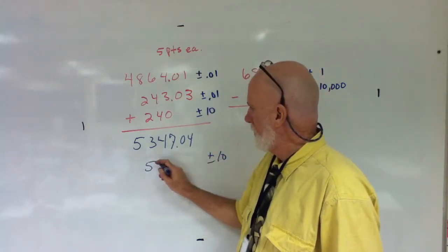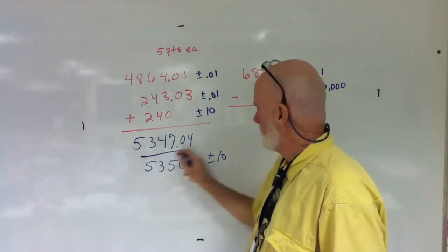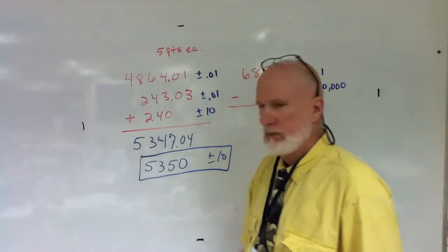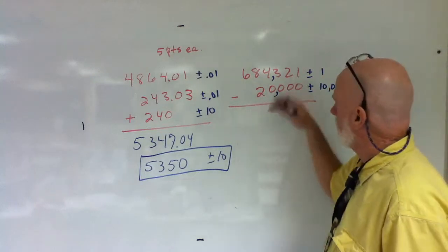So it's going to be five thousand three hundred fifty. Correct. Yep, five points. Okay, yes, five points each.